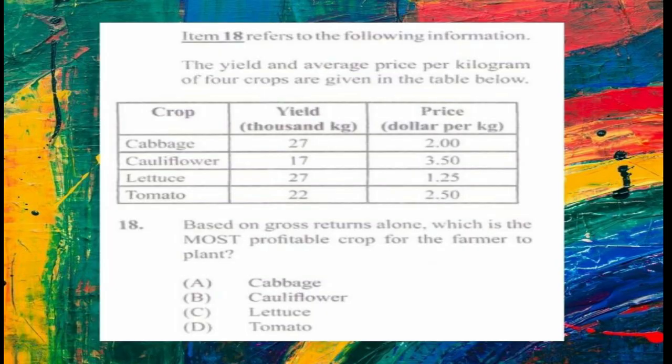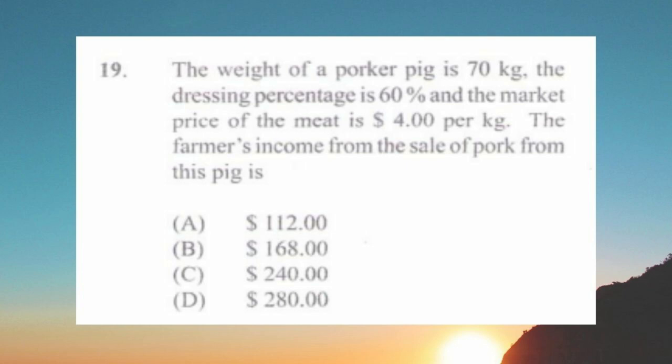Question number eighteen refers to the following table showing yield and average price per kilogram of four crops. Based on gross return only, which is the most profitable crop for the farmer to plant? a) cabbage, b) cauliflower, c) lettuce, d) tomato. The answer is b) cauliflower.